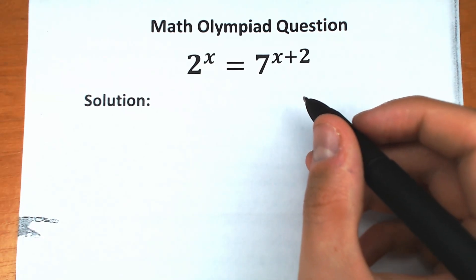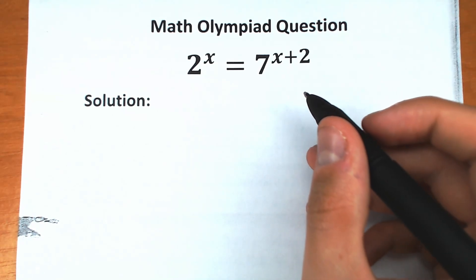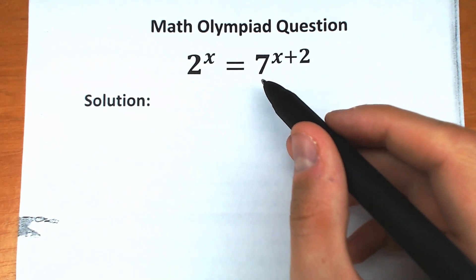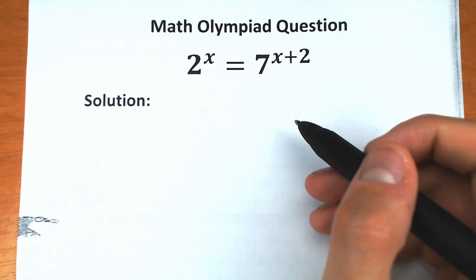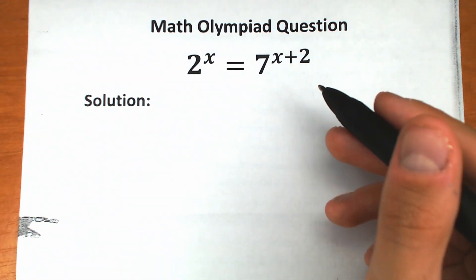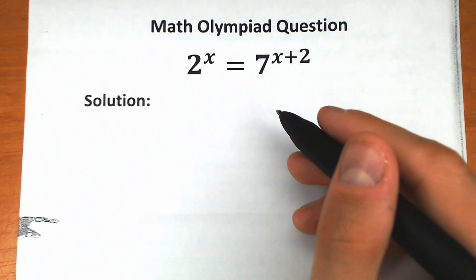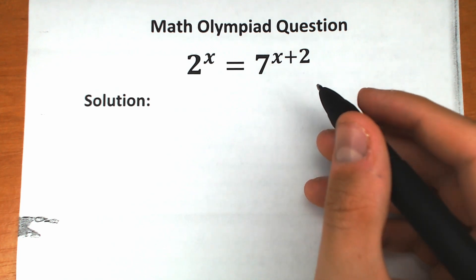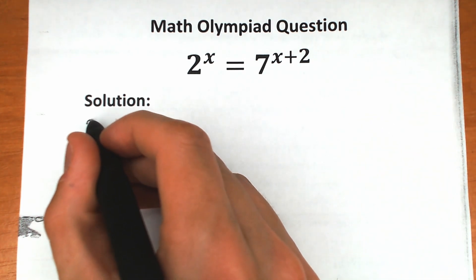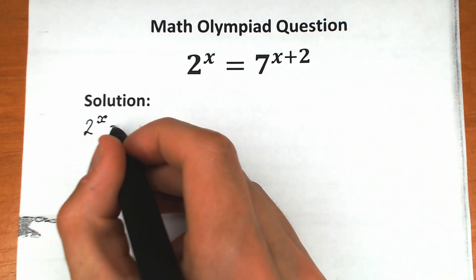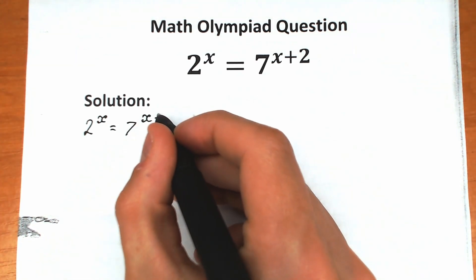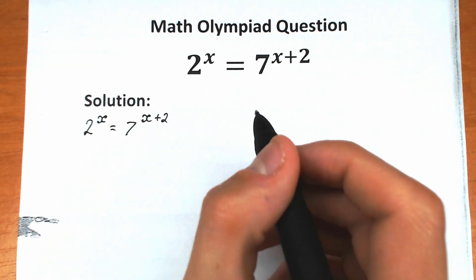Welcome back to my channel Hiya Mathematics. Today we have a really interesting exponential equation: 2 to the power x equals 7 to the power x plus 2. How can you solve this challenge and find x? In this video I'm going to fully explain how to do this step by step. First of all, let's rewrite our challenge: 2 to the power x equals 7 to the power x plus 2.